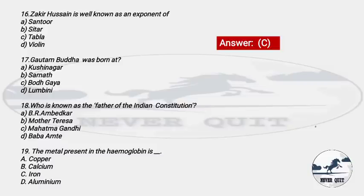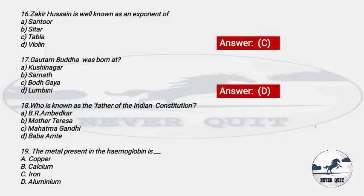Question 17: Gautam Buddha was born at — Options: A) Kushinagar, B) Sarnath, C) Bodh Gaya, D) Lumbini. The right answer is option D — Lumbini, Nepal. As a homework, tell me in the comments in which year (CE) Gautam Buddha was born.